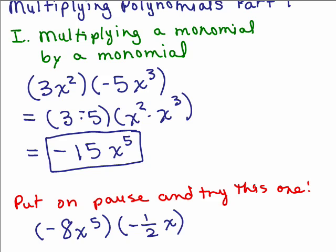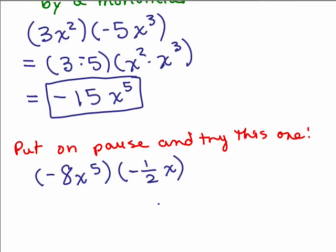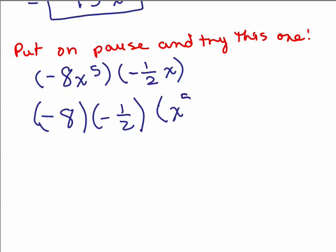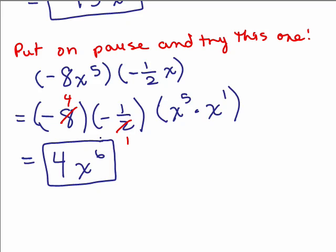Here's one for you to try — put the video on pause and try this one. Negative 8x to the 5th times negative 1 half x. We have negative 8 times negative 1 half times x to the 5th times x. Remember, x is the same as x to the 1st power. Negative times a negative is a positive, and 8 times 1 half gives you 4. Adding the exponents, 5 plus 1 is 6, so the answer is 4x to the 6th.